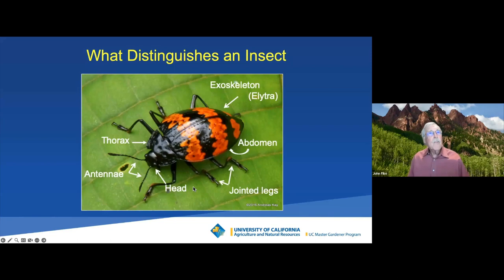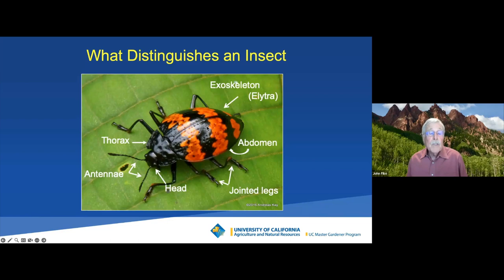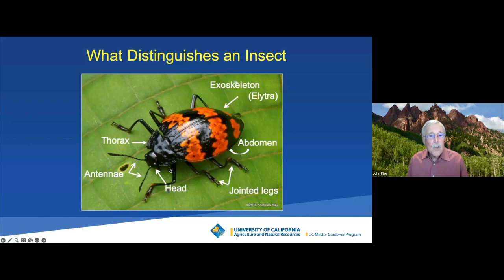Another characteristic of arthropods is that their skeleton is on the outside of the body — like this beetle, called a zigzag beetle. The exoskeleton on a beetle is called an elytra. When the beetle wants to fly, the elytra opens, the wings come out, and they fly away. Think of the Dungeness crab if you want to think about exoskeleton — you have to beat it with a mallet to get to the meat of the legs.